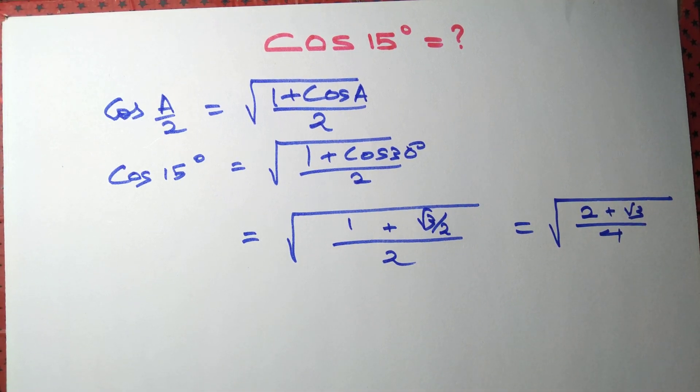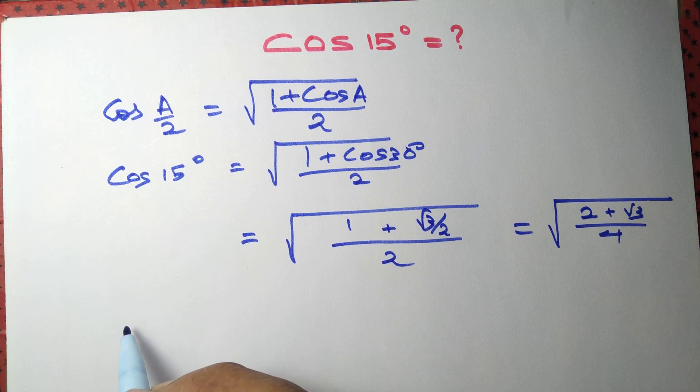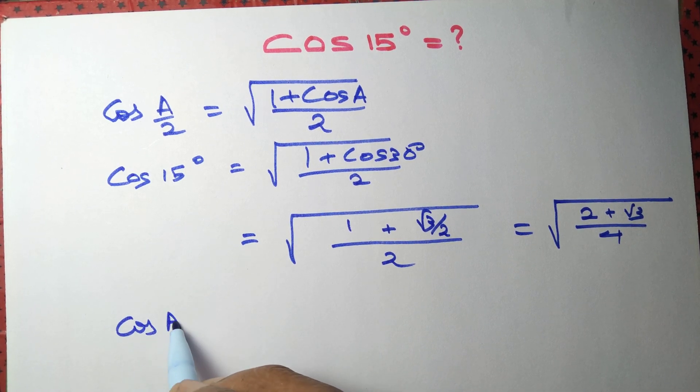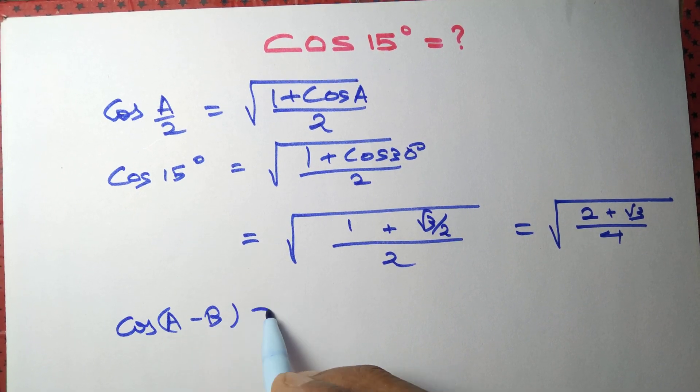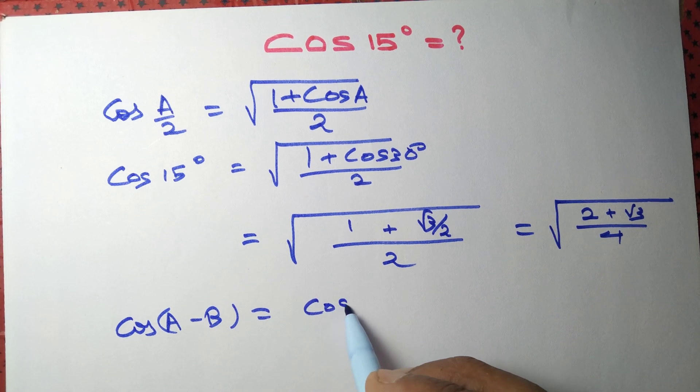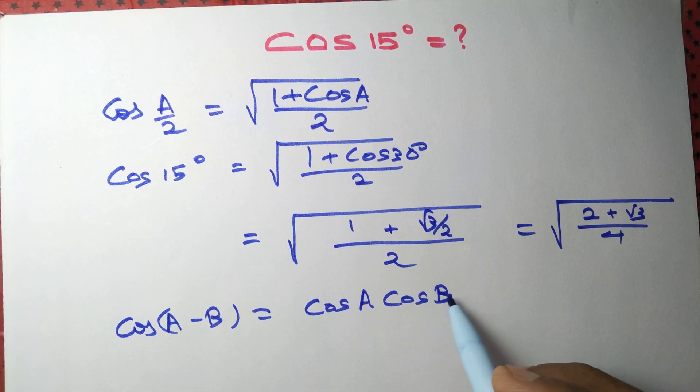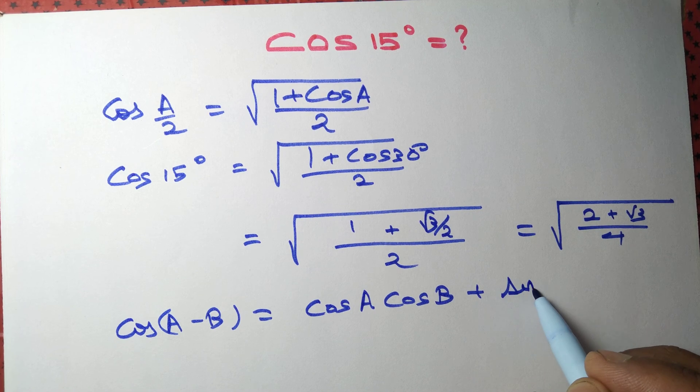Let's try another method. We know that cos(A - B) equals cos A cos B plus sin A sin B.